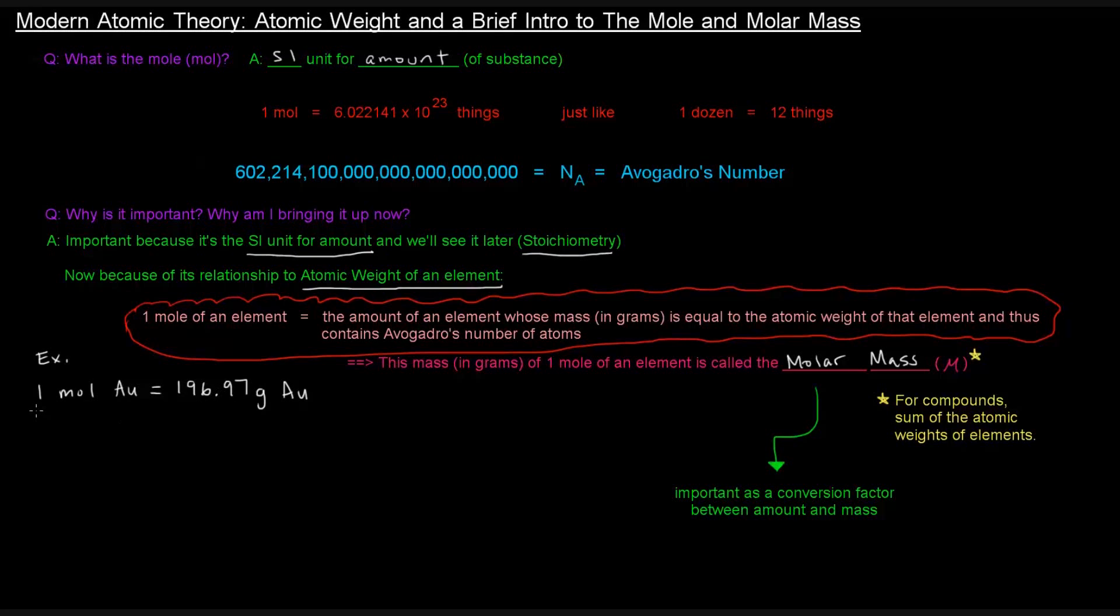And what you can do here is if you divide both sides, let's put this in a different color. If you divide both sides by one mole of gold, what you have is 196.97 grams of gold over one mole of gold equals one. If something equals one, it could be used as a conversion factor.